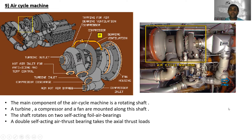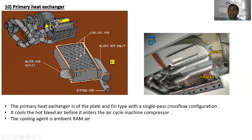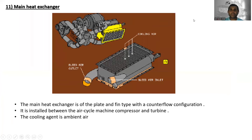The primary heat exchanger — you can see the cooling air inlet, bleed air inlet, bypass air, and bleed air outlet. The primary heat exchanger is of the plate and pin type with a single pass cross-flow configuration. It cools the hot bleed air before it enters the air cycle machine compressor. The cooling agent is ambient ram air.